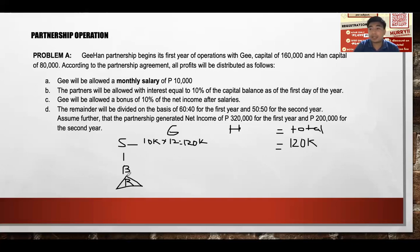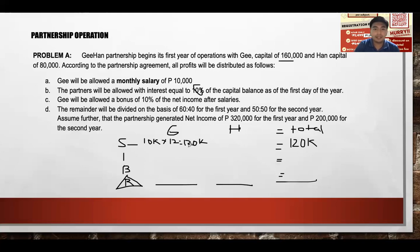The remainder is the adjusting value. For interest: 10% of $160,000 is $16,000 for Ji, and $16,000 goes in Ji's column. For Han, $8,000 is placed in Han's column. Total interest for both partners is $16,000 plus $8,000, which equals $24,000.